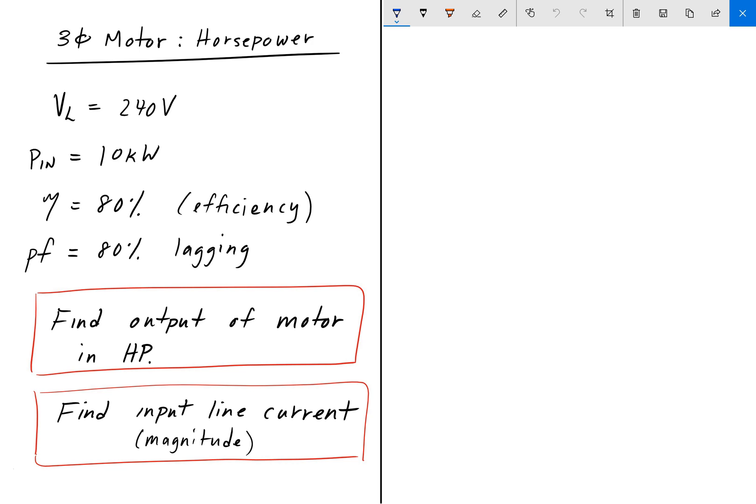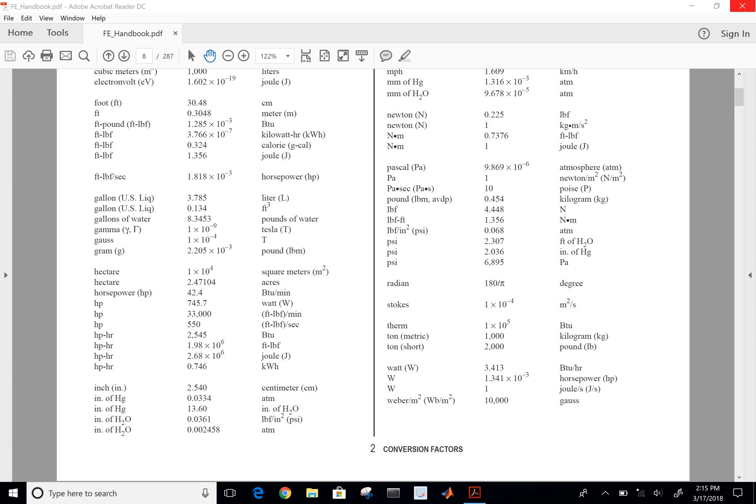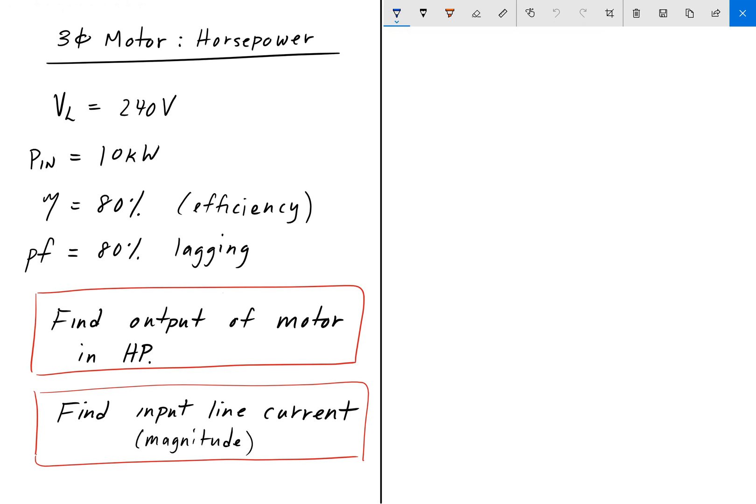As always, pause the video, give it a shot, and we'll go over the answer in a bit. So to go about solving this, we can go to the FE handbook. And in the FE handbook, in the conversion factors section, we have the relationship between horsepower and watts. And that's given right here. So one horsepower is equal to roughly 746 watts. So we'll need that to solve the problem.